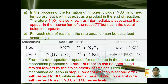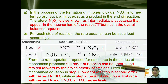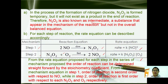For each step of the reaction, the rate equations can be described as follows. For step one, the rate equation is: rate = k[NO]². Whereas in step two, N₂O₂ + O₂ → 2NO₂, the rate equation can be written as: rate = k[N₂O₂][O₂].